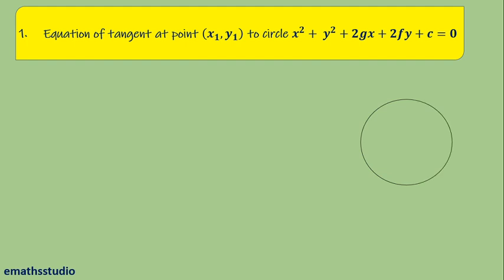The center of this circle is (−g, −f). We have considered (x1, y1) as one of the points on the circle where we are drawing the tangent to the circle. So this line is the tangent. Now, how to find the equation of this tangent — that is what we are going to discuss.